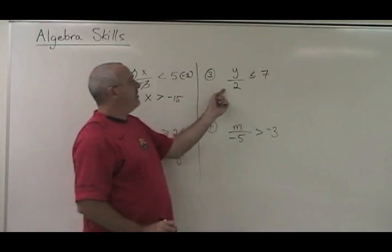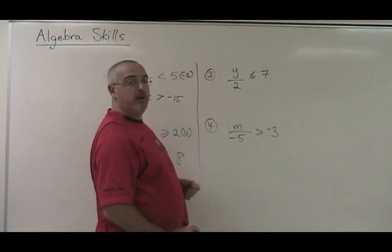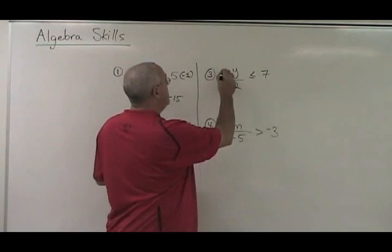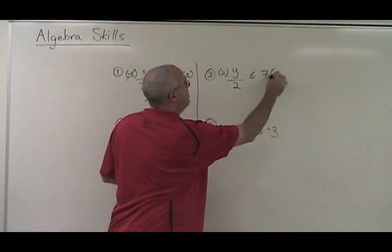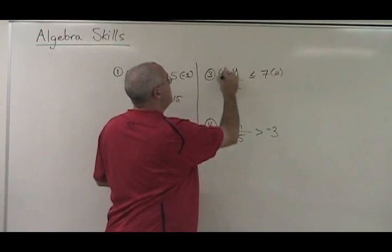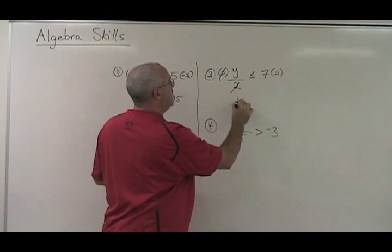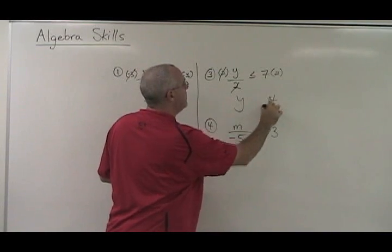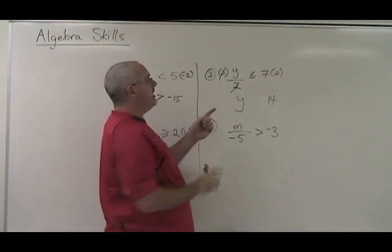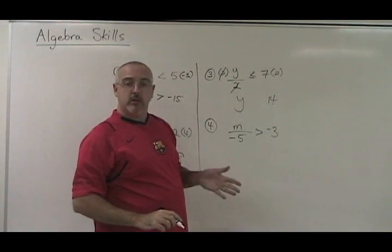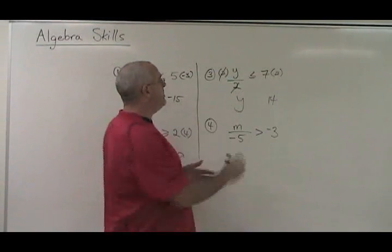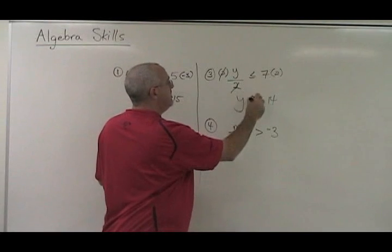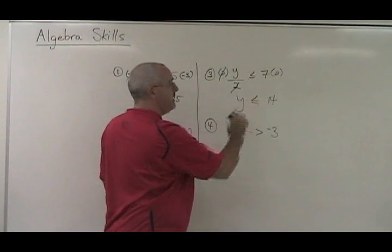Example 3. y is being divided by 2. I multiply both sides by 2. These 2's cancel. y is isolated. 7 times 2 is 14. Because I multiply both sides by a positive number, I leave the symbol the way it already is.